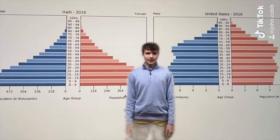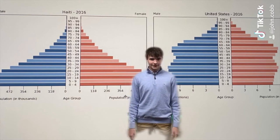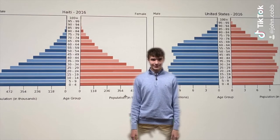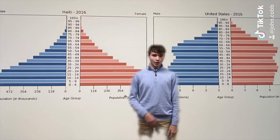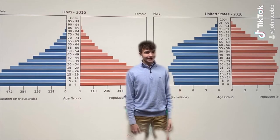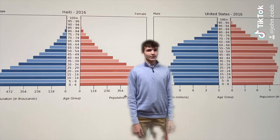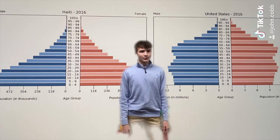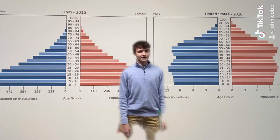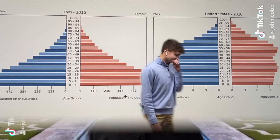On the left, Haiti's diagram has a wider base, which means there is a higher percentage of younger people, causing the population to rapidly increase over time. On the right, the United States diagram is more dispersed, which means they have a more stable population — not increasing or decreasing significantly.